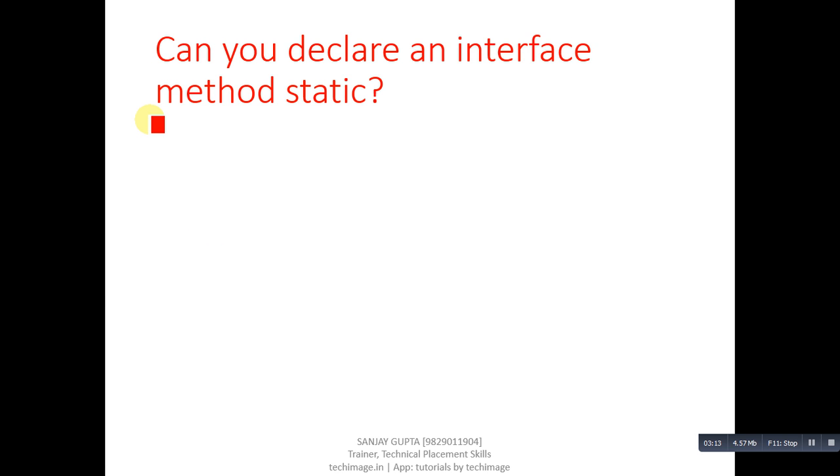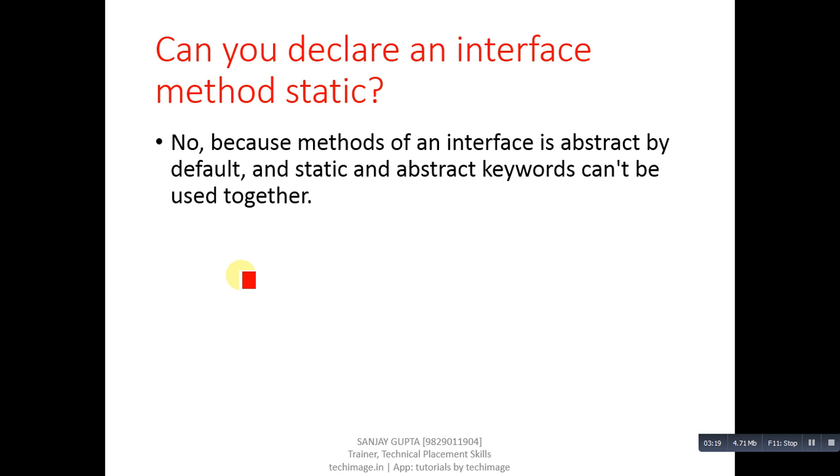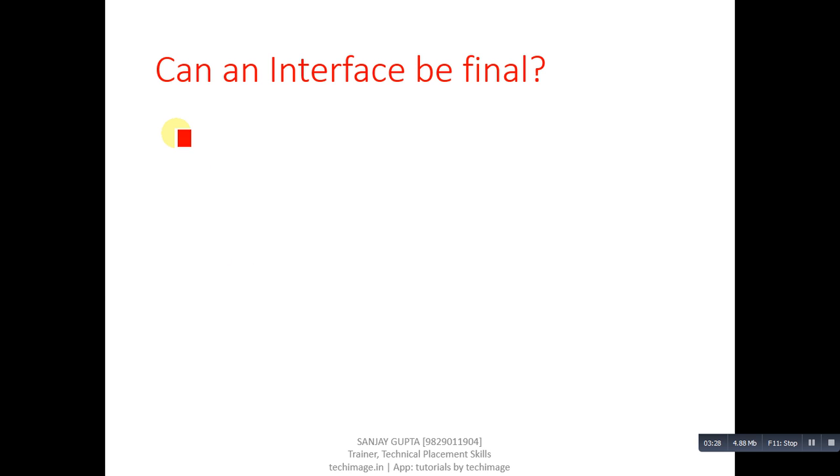Next question, can you declare an interface method static? Answer is no, because methods of an interface is abstract by default and static and abstract keyword can't be used together. Next question, can an interface be final? Answer is no, because its implementation is provided by another class.